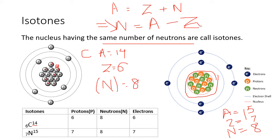Confirming the count: carbon has eight neutrons and nitrogen also has eight neutrons. Whenever nuclei have the same number of neutrons, they are called isotones.